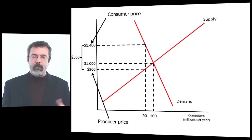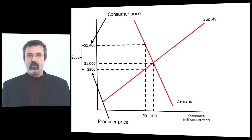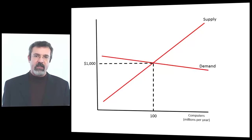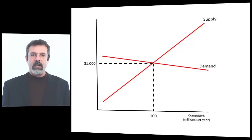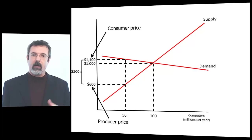This makes sense: if consumers regard computers as a necessity, producers are more able to pass on the tax to the consumer. Now, suppose consumers regard computers as a luxury. As a luxury, the demand curve is flatter. Without the tax, the equilibrium price is $1,000 — consumers pay $1,000 and producers receive $1,000. With the $500 tax, the consumer price rises to $1,100 while the producer price falls to $600. So consumers are paying $100 of the $500 tax, and producers are paying the other $400.